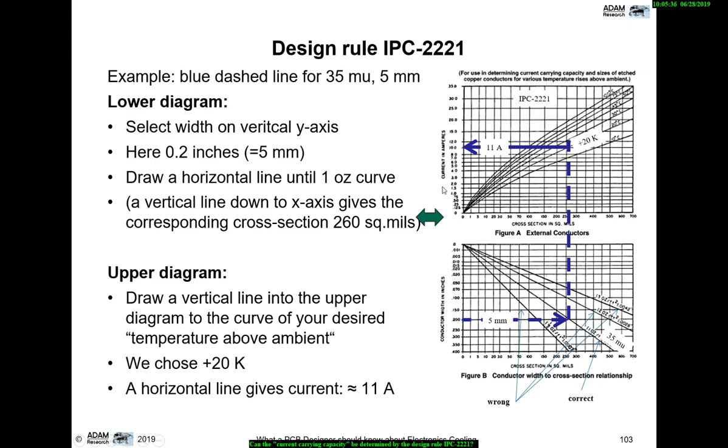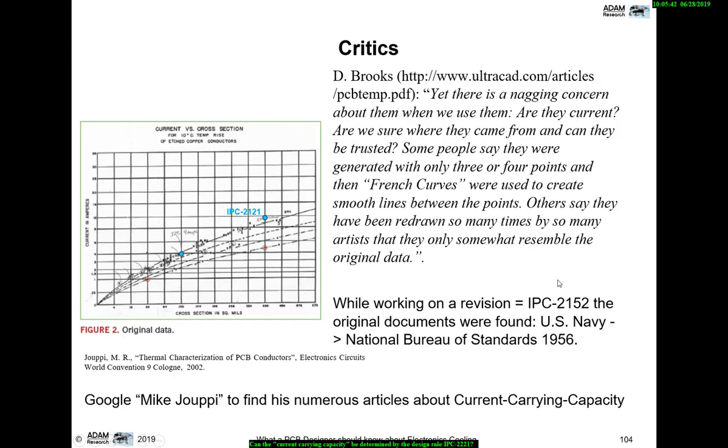But people were asking, what is the background of this graph? And in about year 2000, IPC hired Mike Juppie to investigate this. And he found that the roots of the graphs date back to 1956. It was an investigation done by the Bureau of Standards for the US Navy. And that's one of the original graphs. This one is for 10 degrees C. You see a bunch of typewriter written data points. All of the lines represent various board setups, materials, etc.